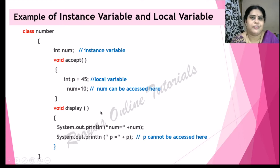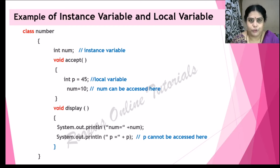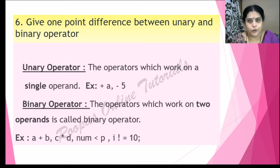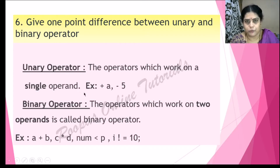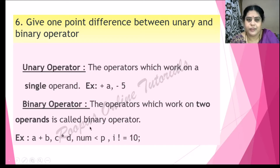There is one more type of variable used in Java — if you know it, please write the definition and name in the comment section. Now, the difference between unary and binary operators: 'unary' means one (single), and 'binary' means two. Operators which work on a single operand are known as unary operators — for example, +a where a is the only operand. Binary operators work on two operands, for example a+b or c-d.